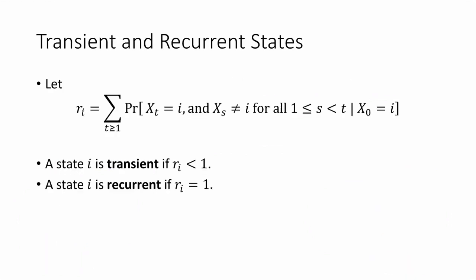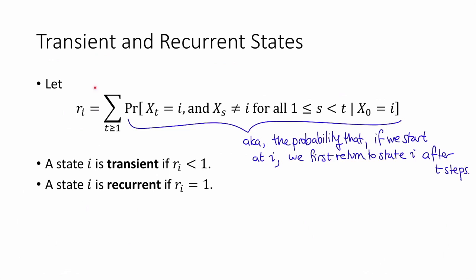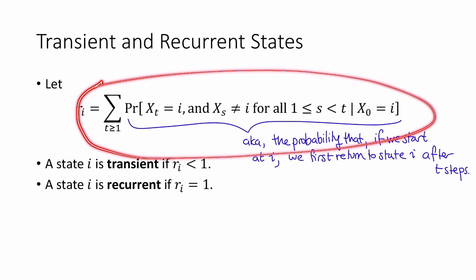Our next definition is that of transient and recurrent states. In a Markov chain, every state can be classified as either transient or recurrent. Define r sub i as the sum over all t greater than or equal to 1 of the probability that x sub t equals i and x sub s is not equal to i for any s strictly less than t, conditioned on x sub 0 equals i. Intuitively, this is the probability that if we start the chain at i, we first return to state i after t steps. Thus, when we sum over all t greater than or equal to 1, this is the probability that we ever return to state i, conditioned on starting in state i.